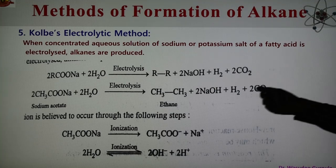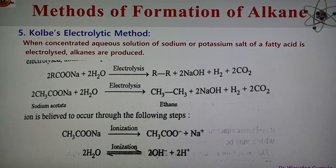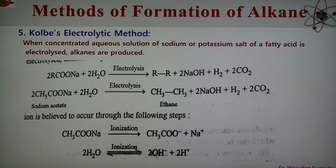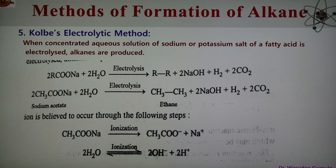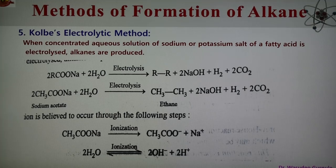The mechanism of the Kolbe electrolysis: sodium acetate and water first undergo ionization to form acetate ions, sodium ions, hydroxide ions, and H+ ions. At the anode, both acetate ions and OH− ions migrate. The discharge tendency of the acetate ion is much higher than that of the OH− ion, so the acetate ion is preferentially discharged. The acetate ion loses two electrons to form the ethane molecule and CO2 gas is evolved. This is known as the Kolbe electrolysis reaction.